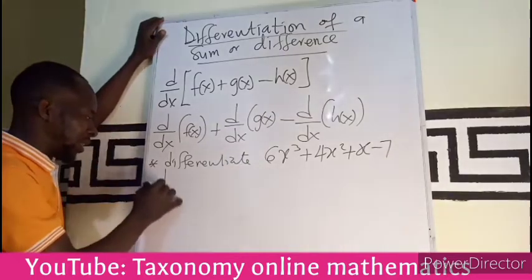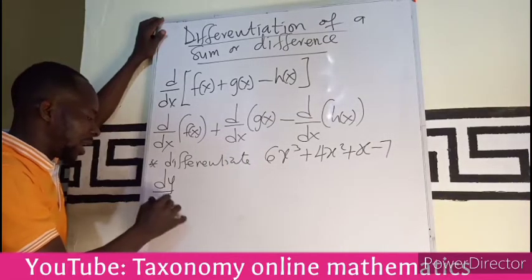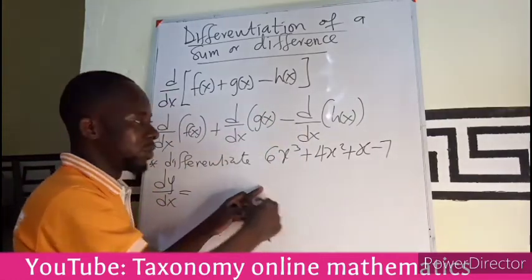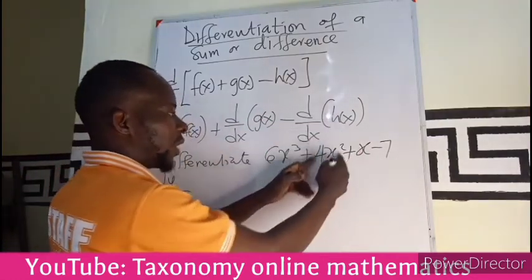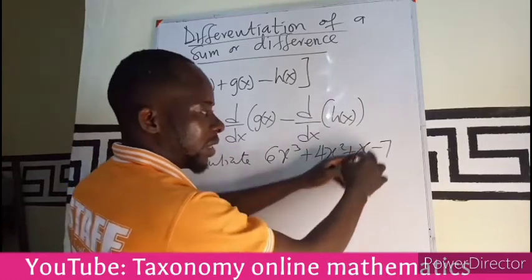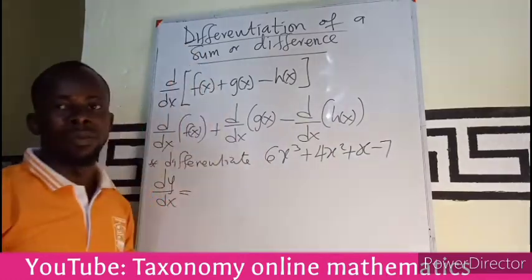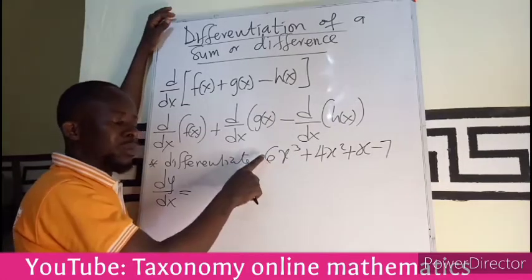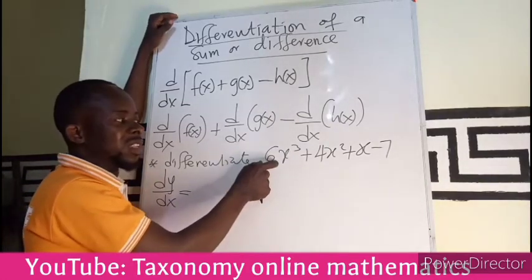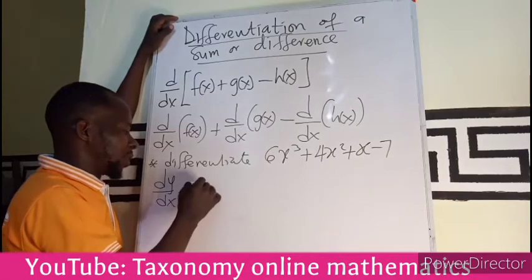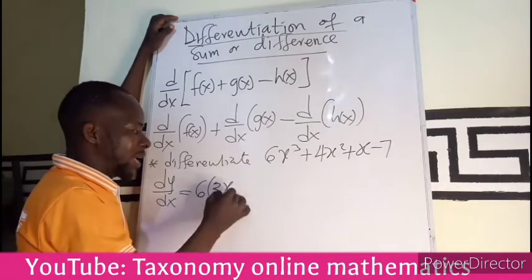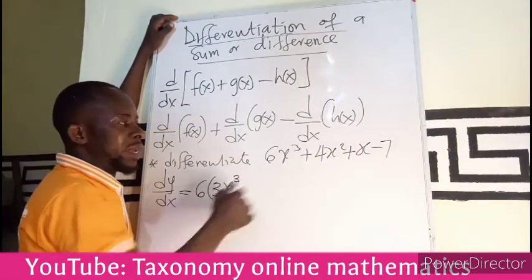I differentiate this value, add it to the differential of this, the differential of this, and subtract that from it. So let's go under this: the exponent multiply the constant because we are holding a constant, and that will give us 6 times 3x, exponent 3, then we reduce the value of the exponent by 1.